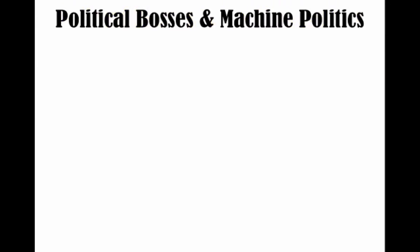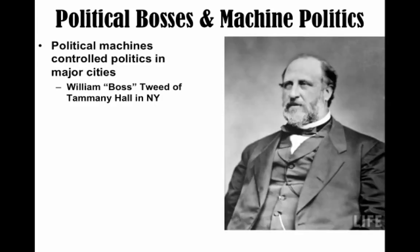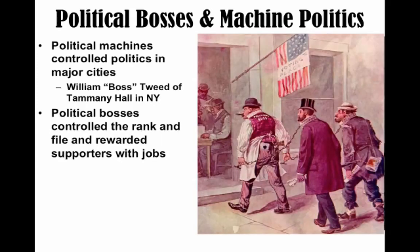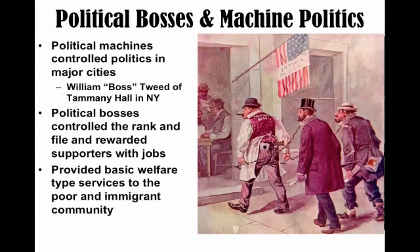Key to city life is the rise of political bosses and machine politics. These are very tightly organized groups, and political machines control the politics in major cities. The most famous example is William 'Boss' Tweed of Tammany Hall in New York. Political bosses controlled the rank and file of the party and rewarded supporters with jobs — if you were loyal politically, they would hook you up with positions within the government. One reason these political machines were so effective is that they provided basic welfare-type services, which were not offered by the government at the time, to the poor and immigrant communities.